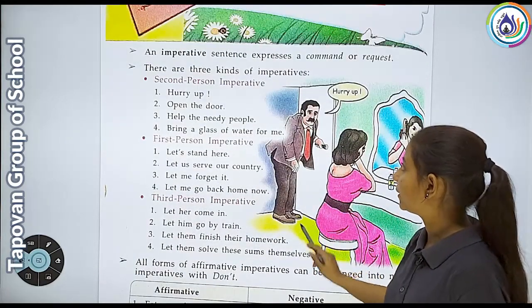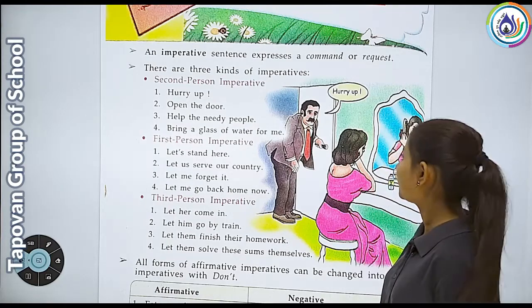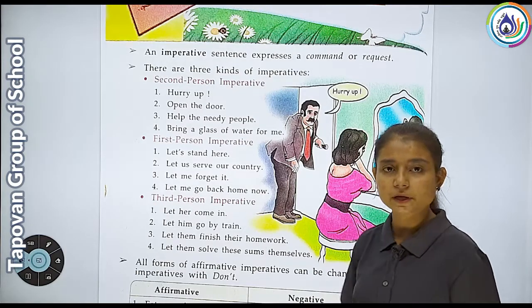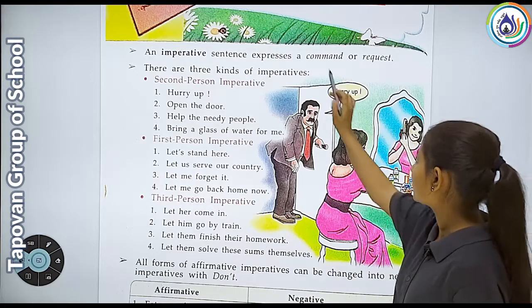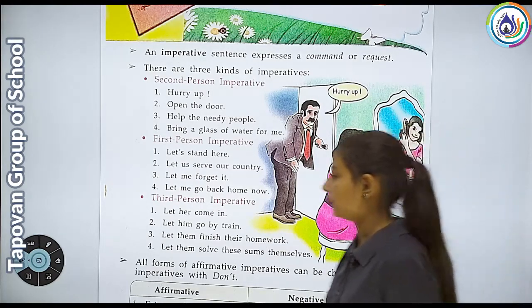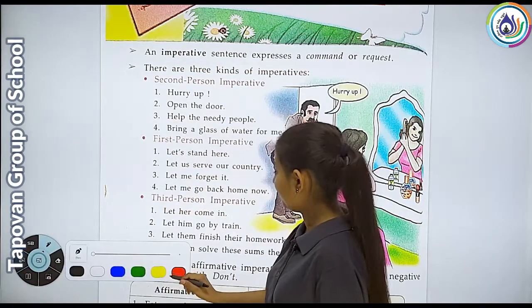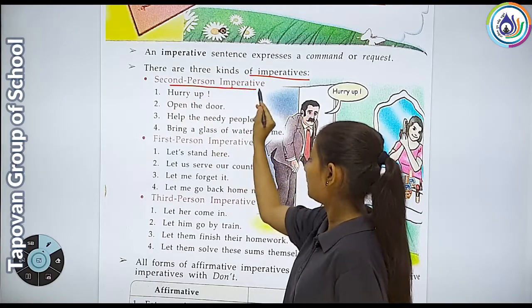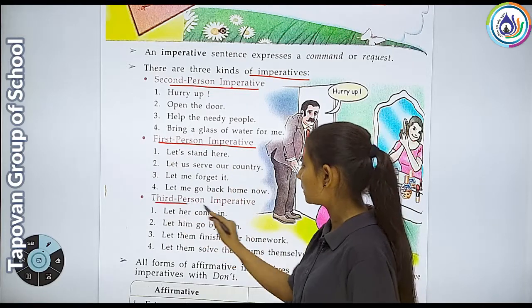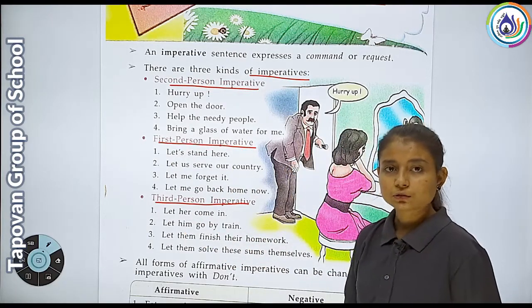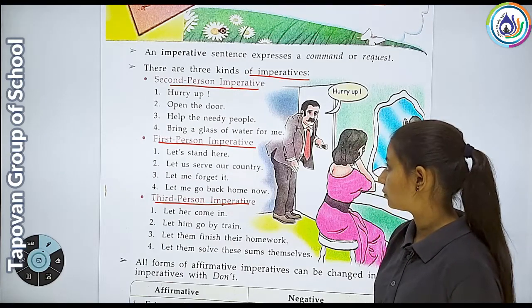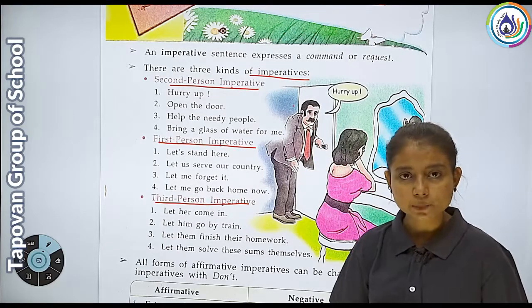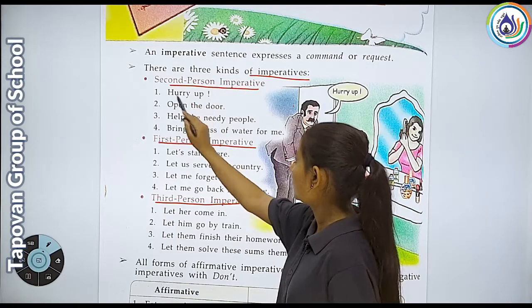Recap: Imperative sentence expresses command and request. Optative sentence expresses hamari desire aur hamari prayer. Imperative sentence mein teen kinds hote hain - there are three kinds of imperative: second person imperative, first person imperative, and third person imperative. Second person mein jab hum doosre person ko bolte hain - jaise ki yahan par insaan dikh raha hai, is aurat ko kehta hai 'hurry up' - jaldi karo - ye second person imperative hai.